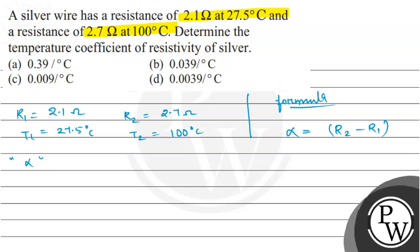We can write it as R2 minus R1, these are resistances, upon R1, upon T2 minus T1. Basically R2, R1, T2, T1 are the resistances at their respective temperatures.